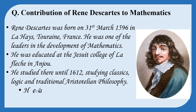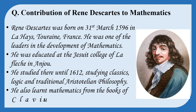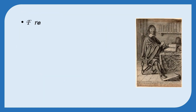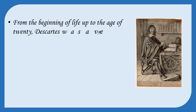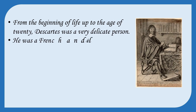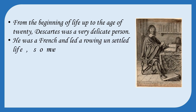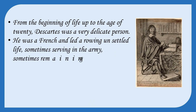He also learned mathematics from the books of Clavius. From the beginning of his life up to the age of 20, Descartes was a very delicate person. He was French and led a roving, unsettled life — sometimes serving in the army, sometimes remaining in loneliness.